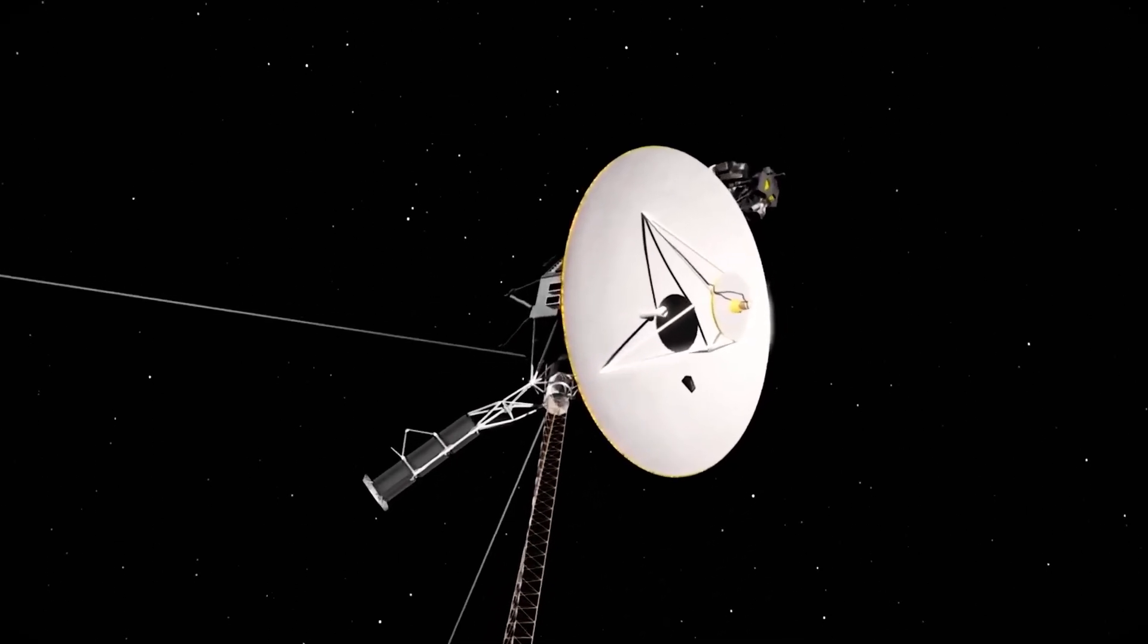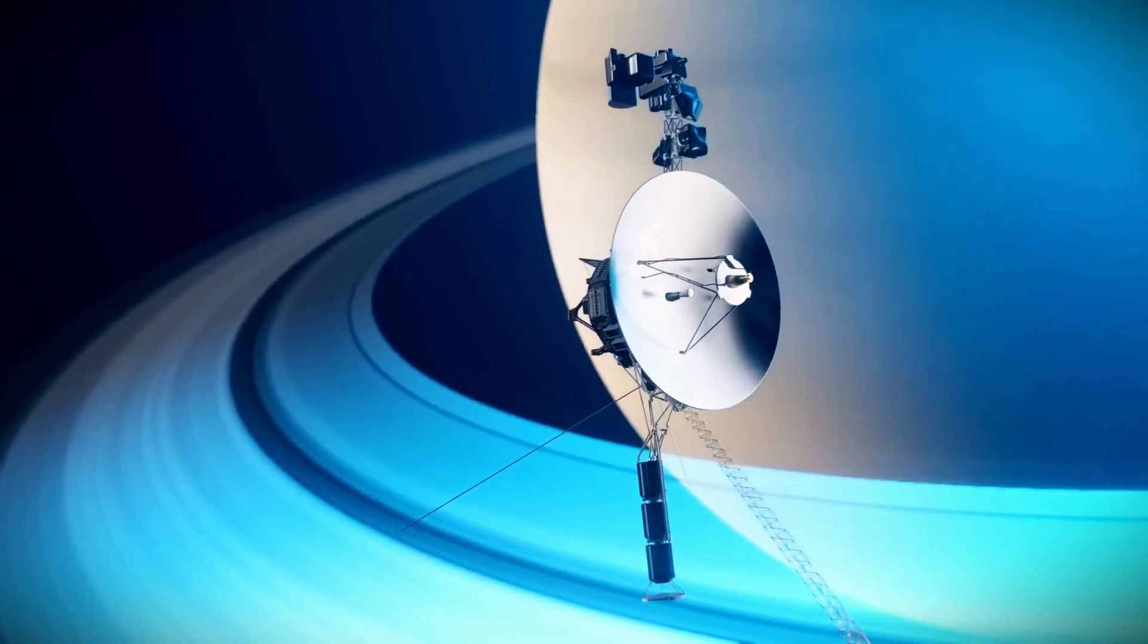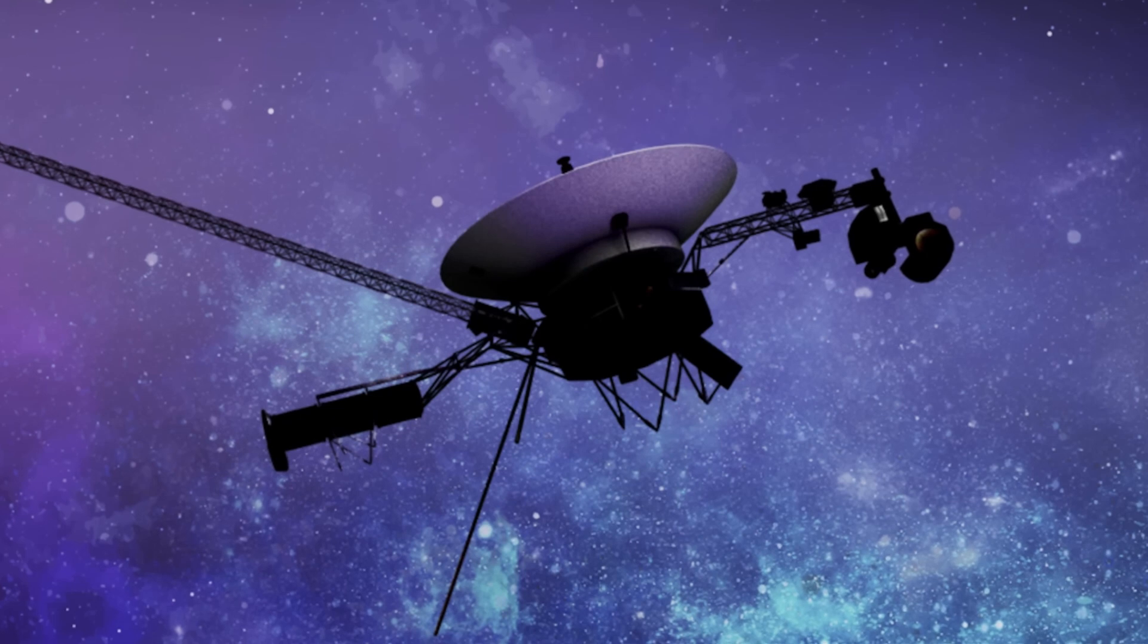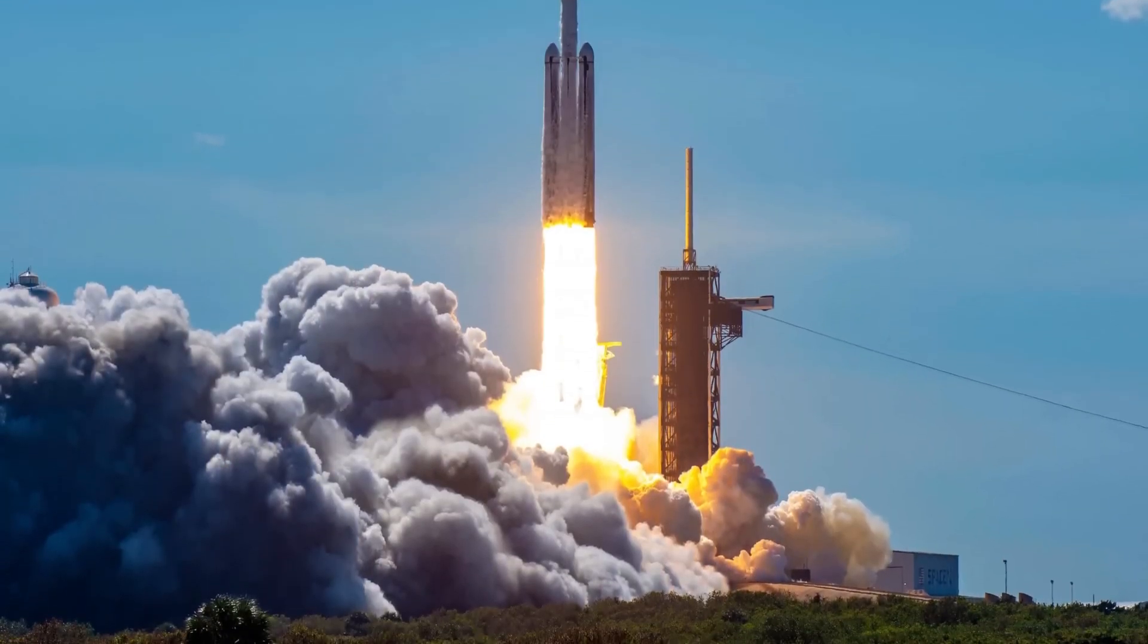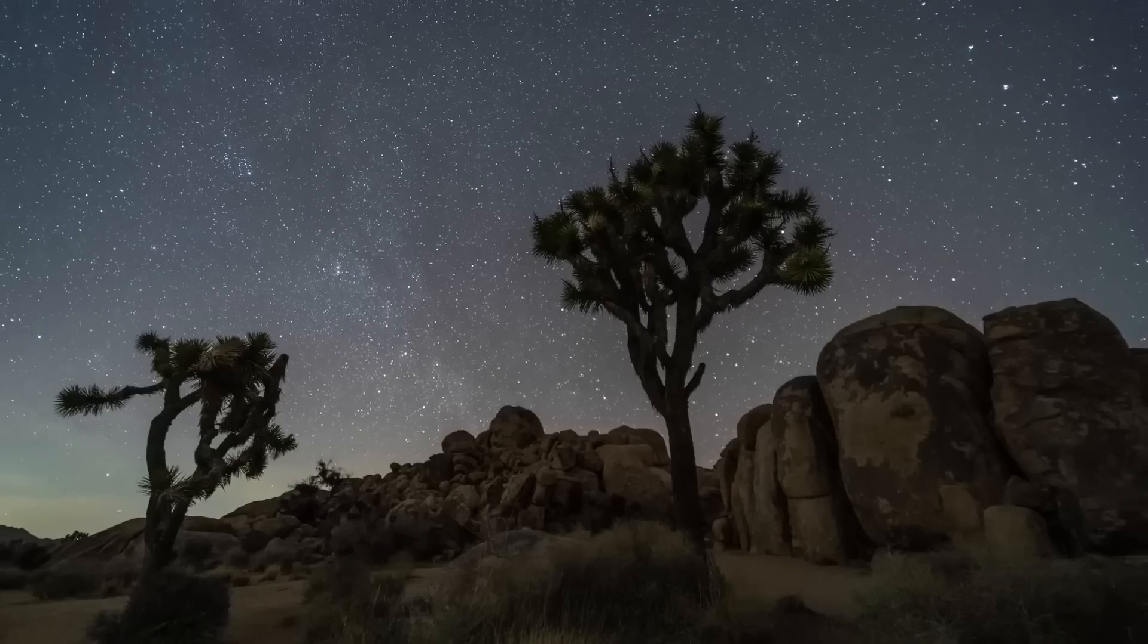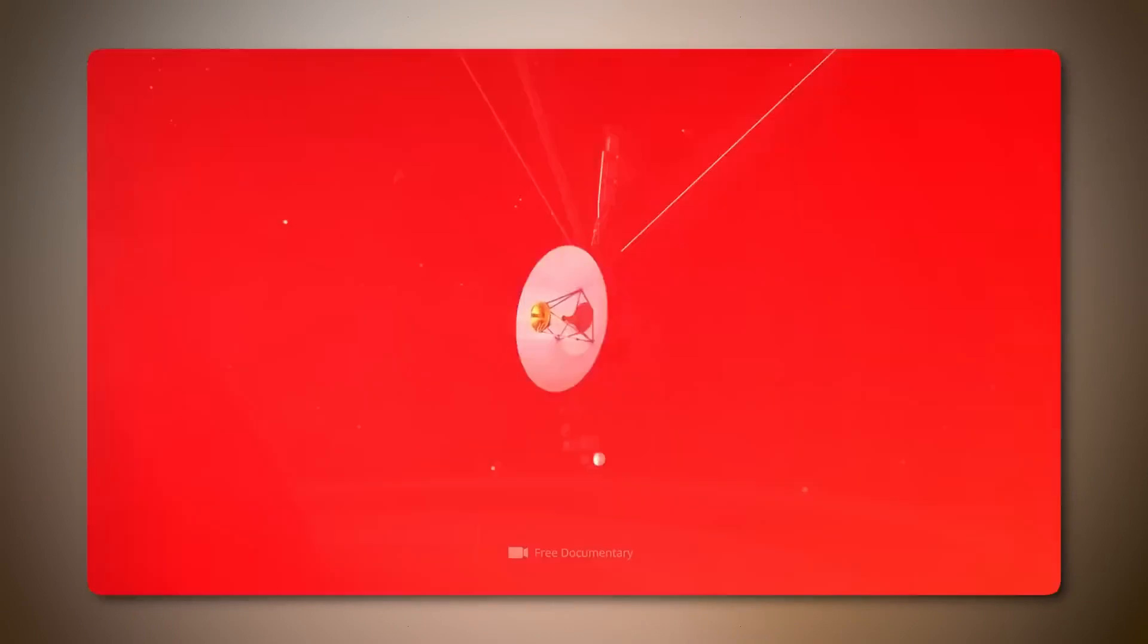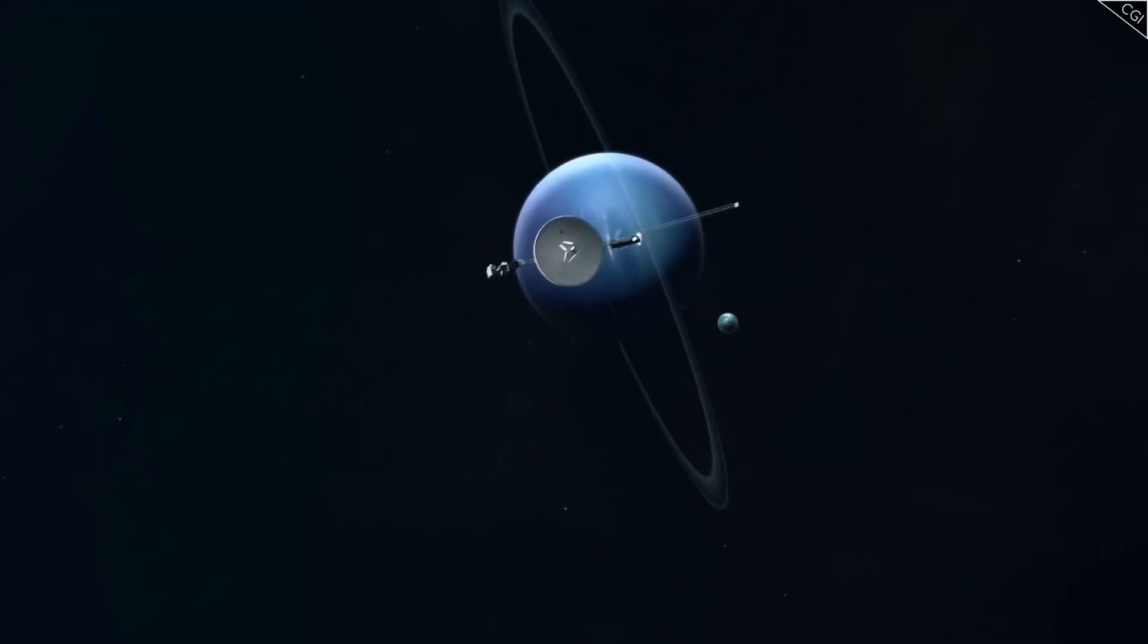This solar wind streams outward in all directions, carrying the Sun's magnetic field across vast distances. Eventually, the solar wind meets the interstellar medium, a region filled with remnants of ancient stellar explosions. Much like oil and water, the solar wind and the interstellar medium don't easily mix, creating a boundary called the heliosphere. This vast bubble extends roughly 11 billion miles from the Sun, encapsulating the Sun, all eight planets, and a significant portion of the solar system's outer regions.